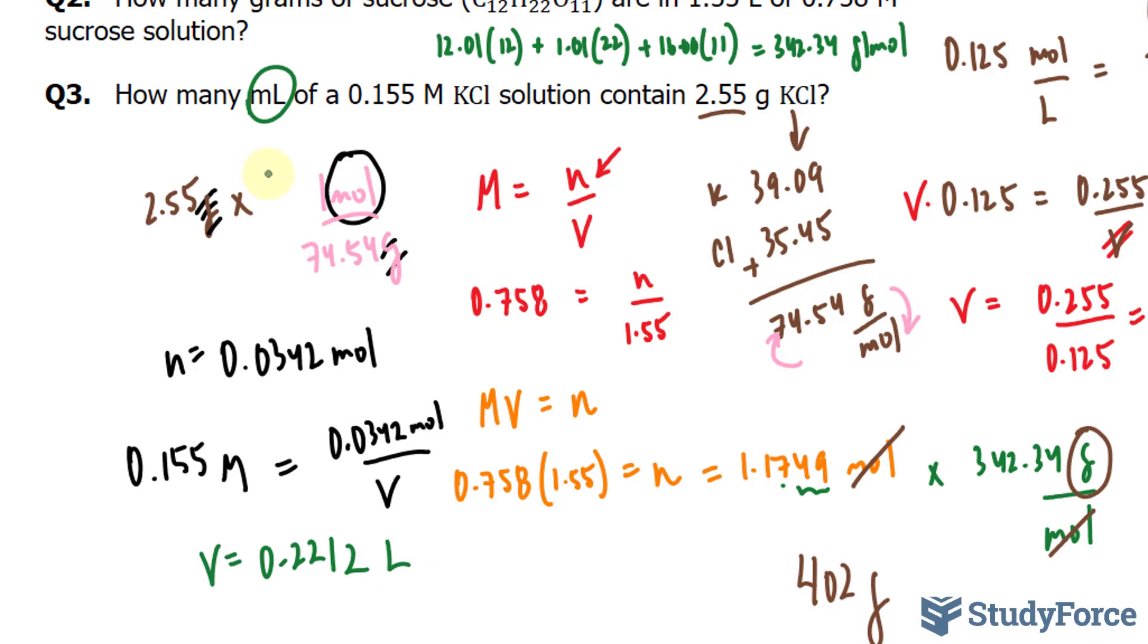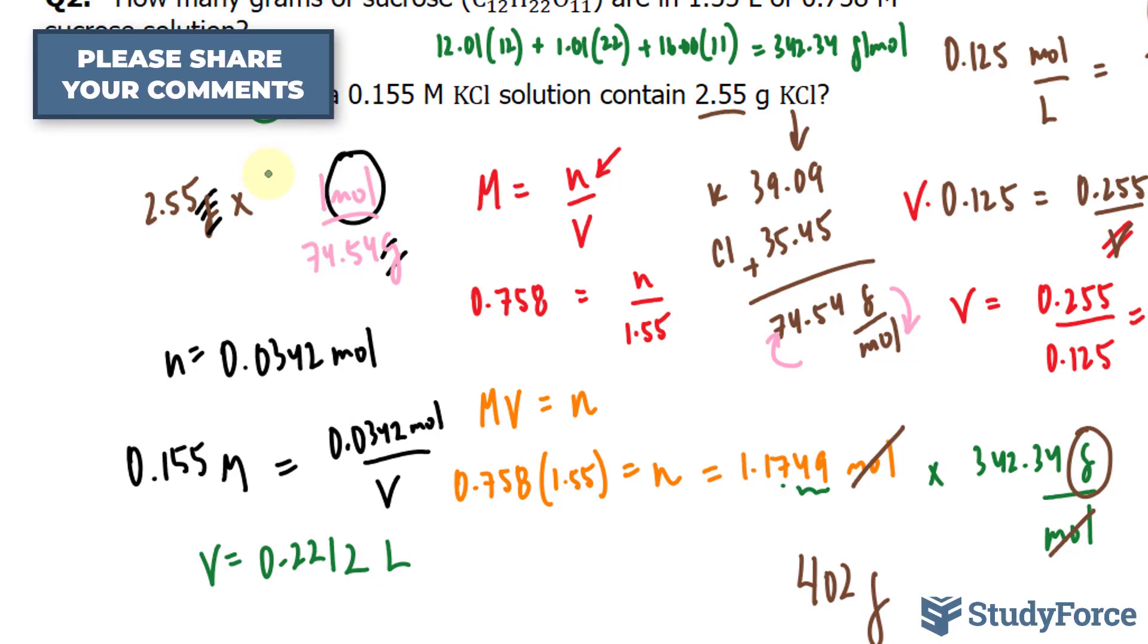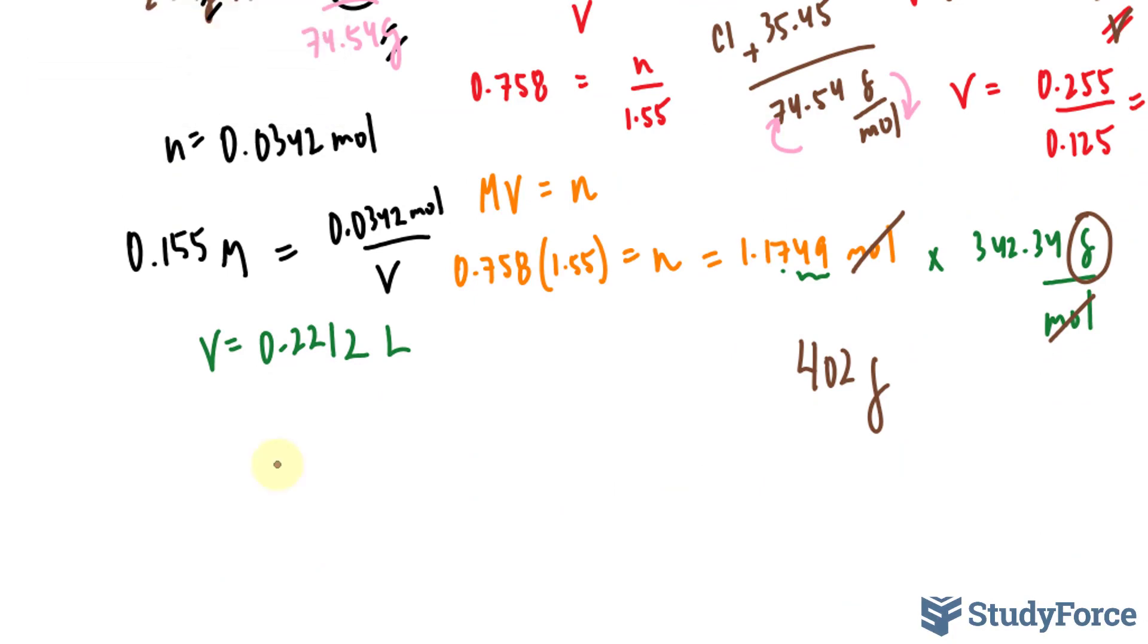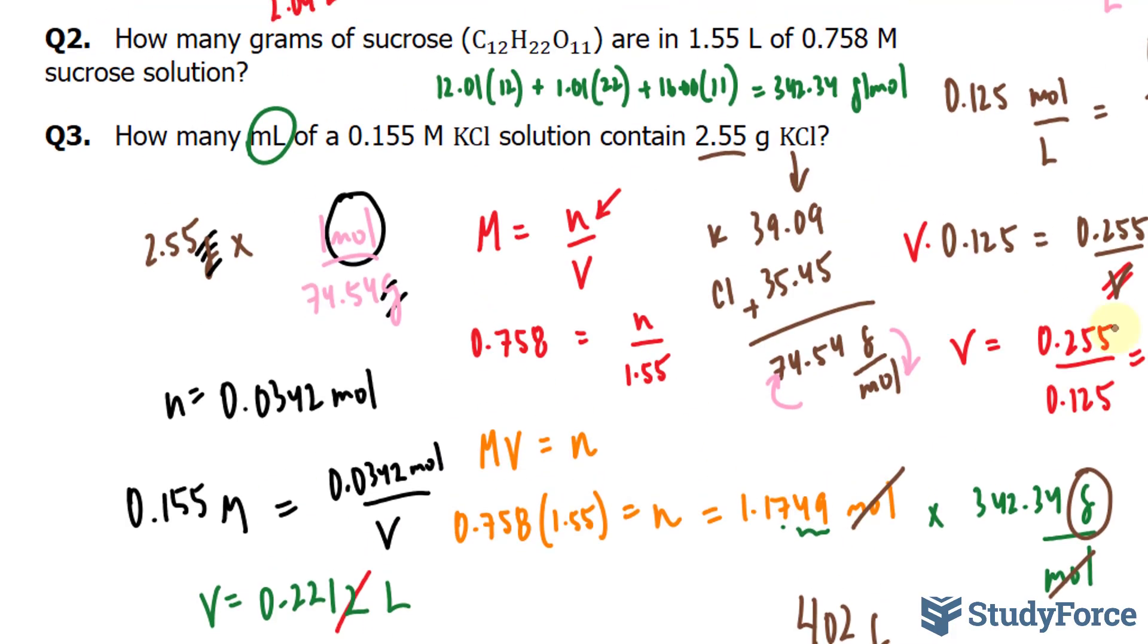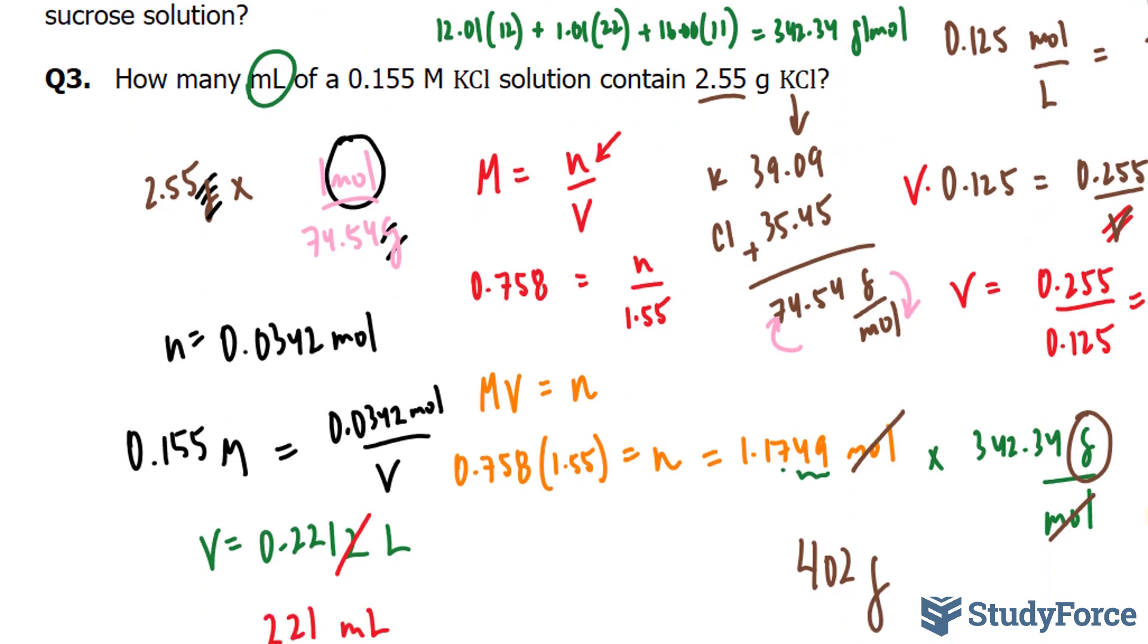They want it in milliliters. To go from liters to milliliters, you multiply by a thousand. That's the conversion ratio. Multiplying this by 1,000, we end up with 221 milliliters. Notice that this 2 is discarded because we started with 3 significant figures and we should end with 3.